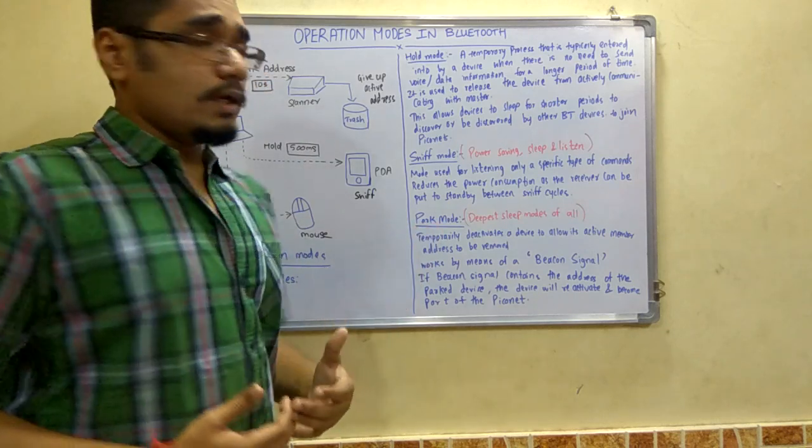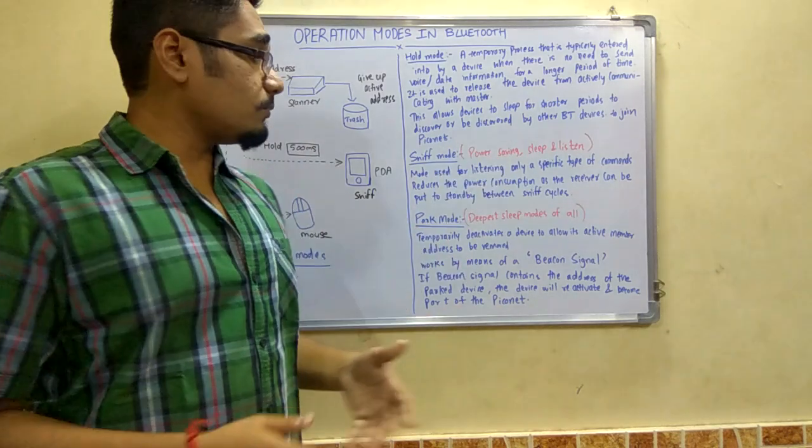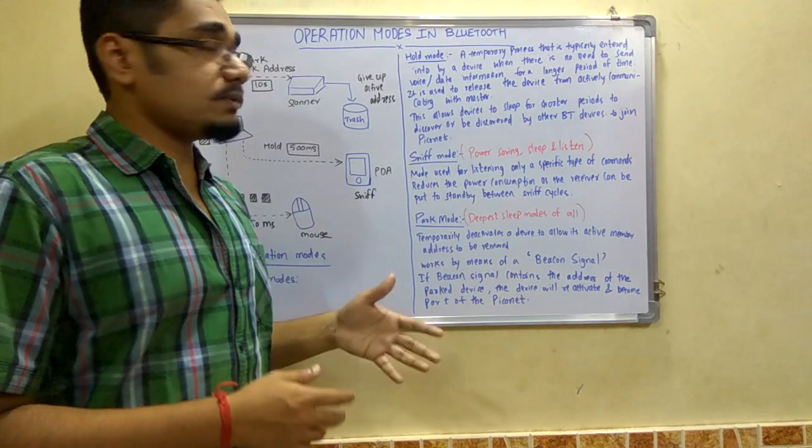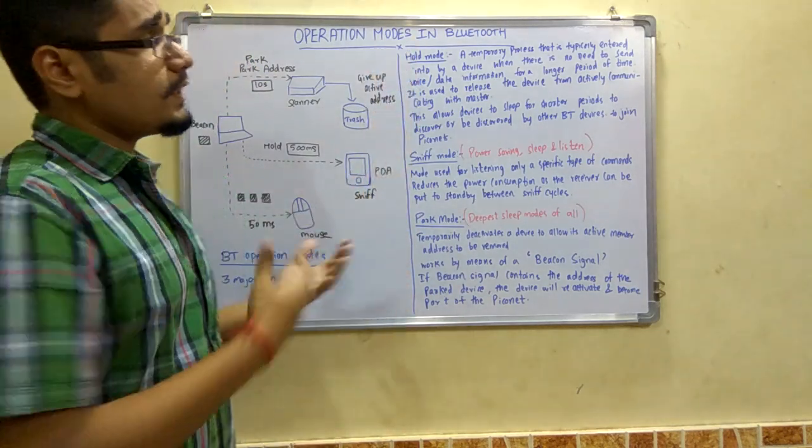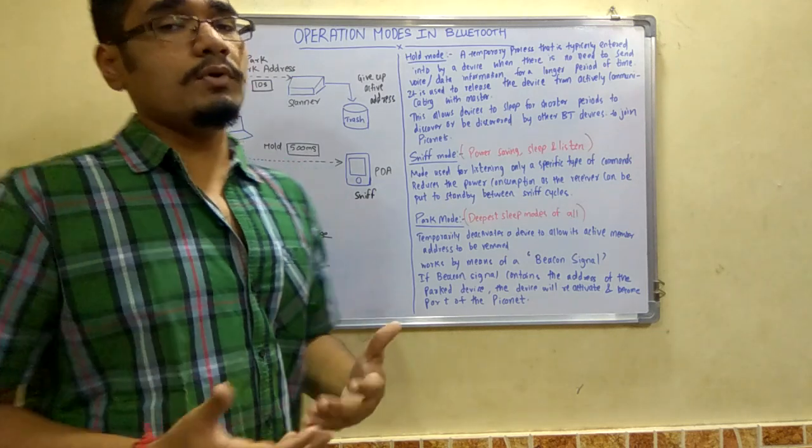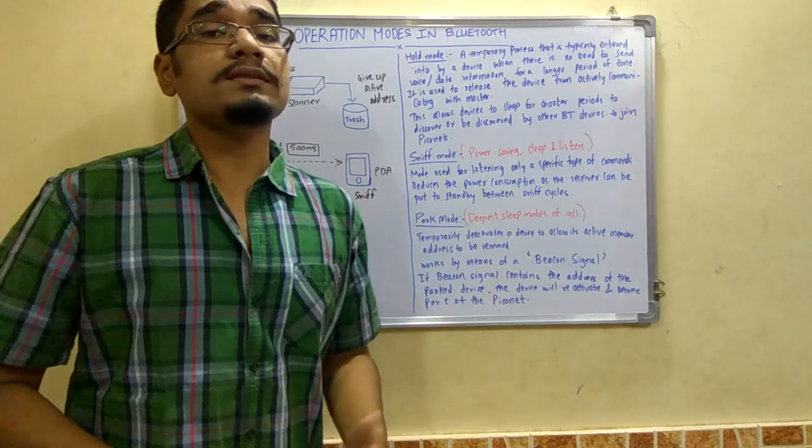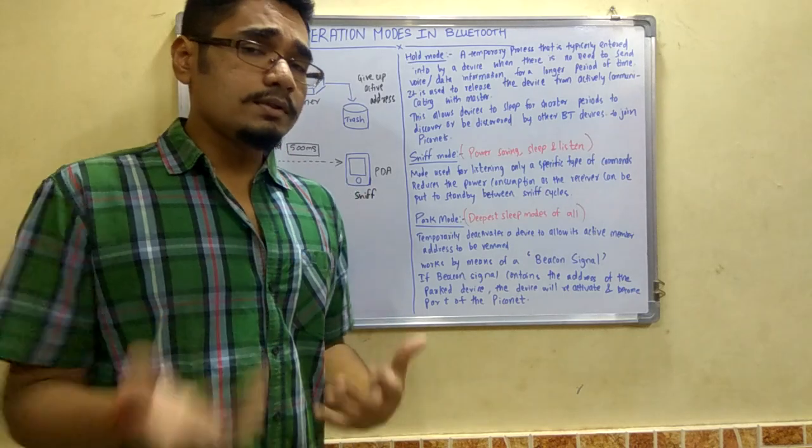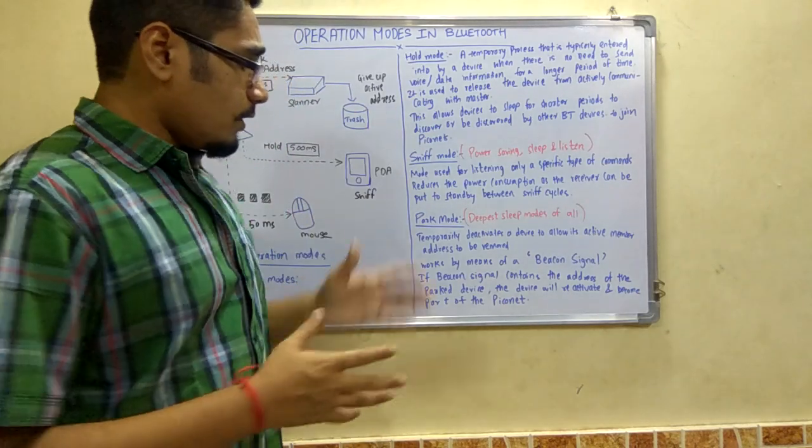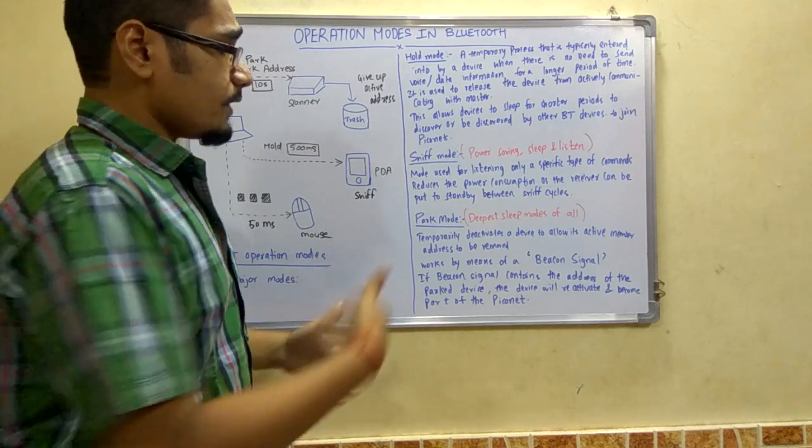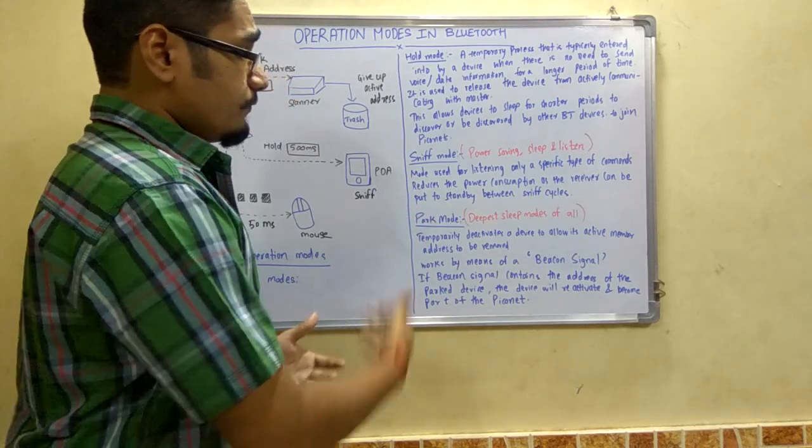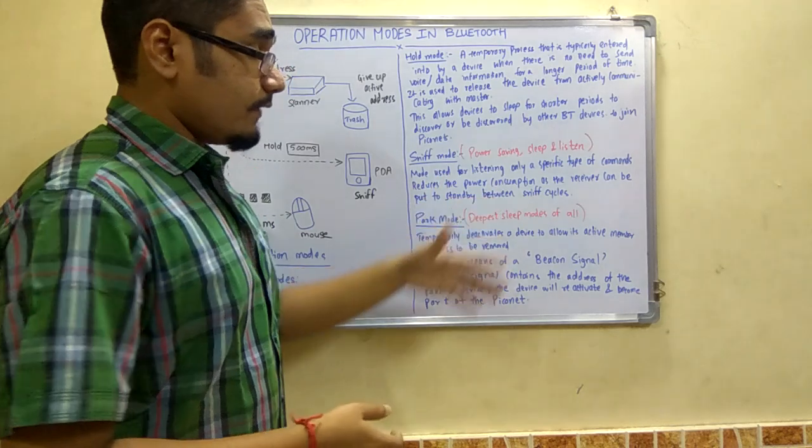Next is park mode. Park mode is the deepest of all these sleep modes. Remember, these three modes majorly in Bluetooth are sleep modes. Park mode is the deepest of all these sleep modes.